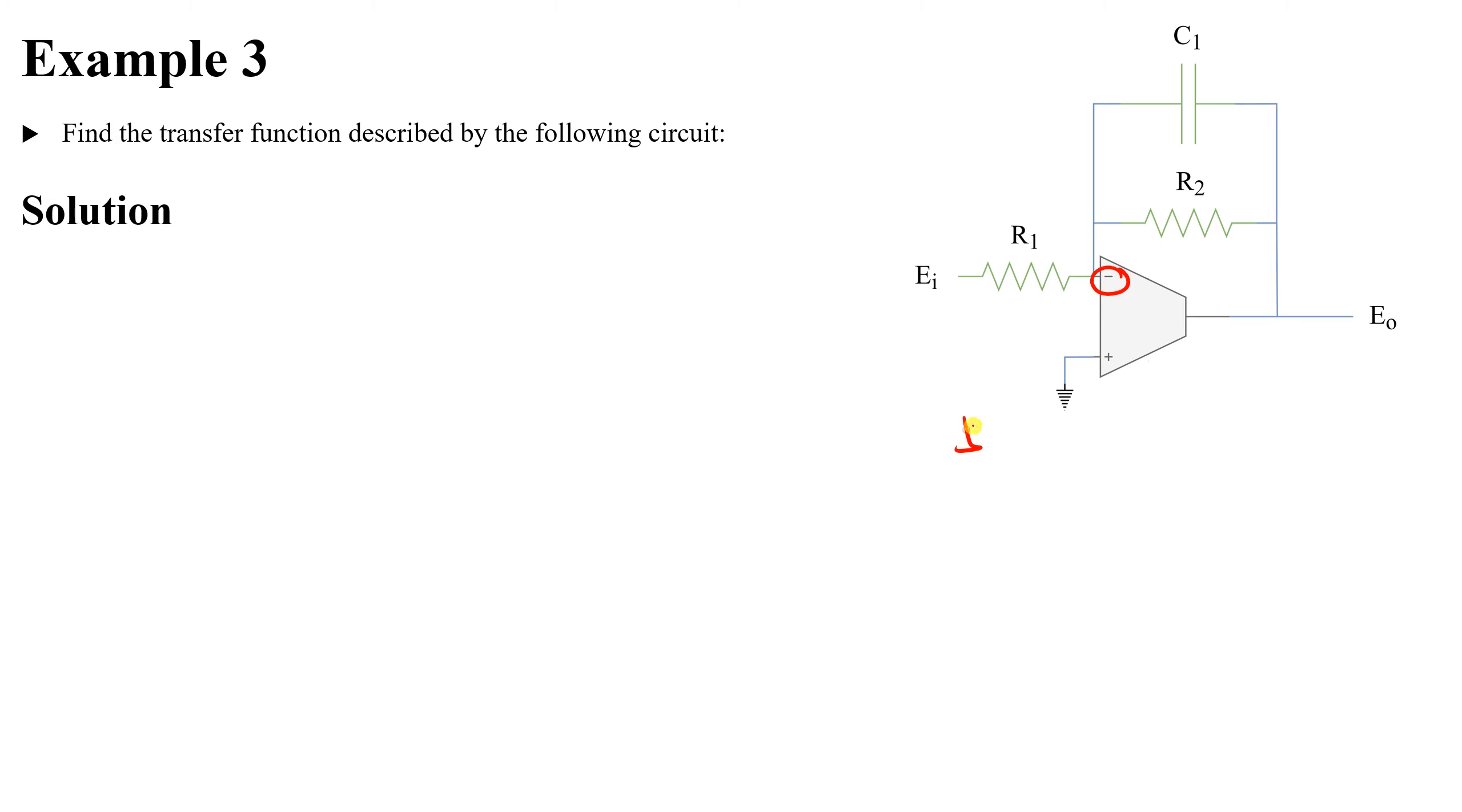So in general, instead of saying V output over V input, or E output over E input, and saying negative R2 over R1, in general we will say negative Z2 over Z1. So impedance of output, which includes resistance, inductance, capacitance, divided by Z of the input.